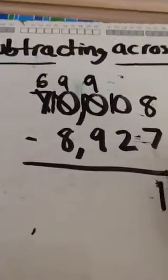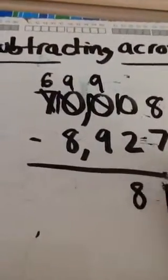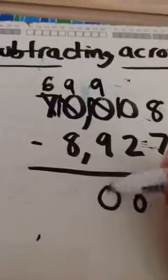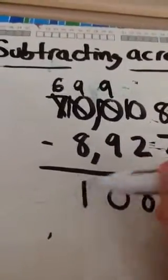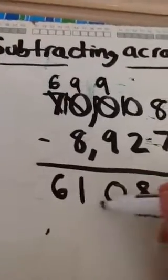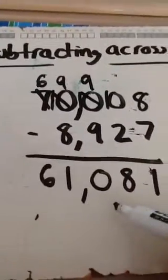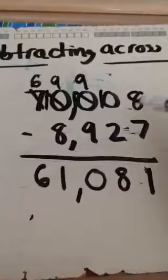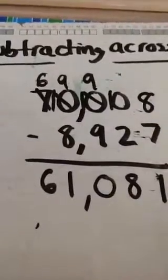I have 8 minus 7 is 1, 10 minus 2 is 8, 9 minus 9 is 0, 9 minus 8 is 1, and that's a 6. So your final answer for this one would be 61,078. And again, at the end, you don't have to borrow.